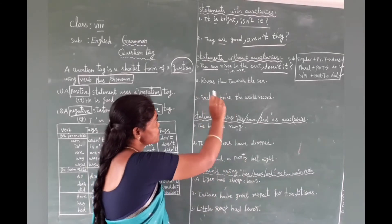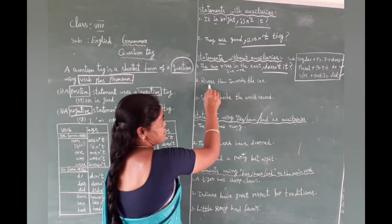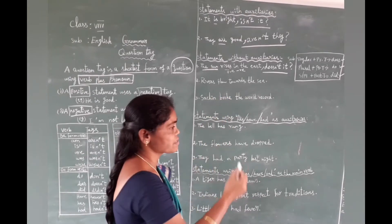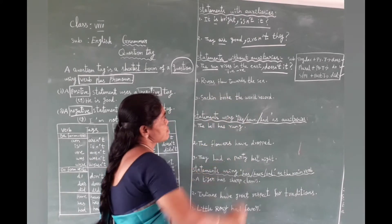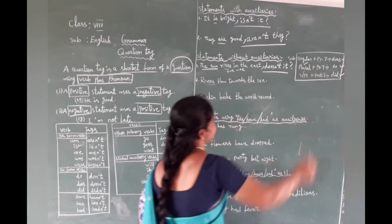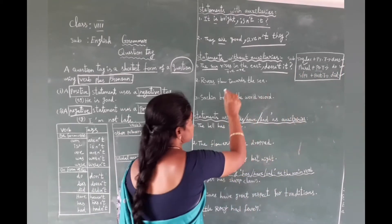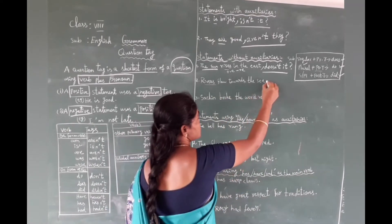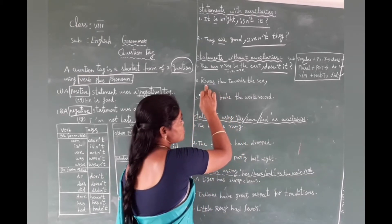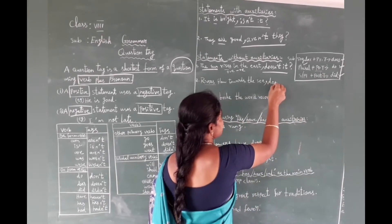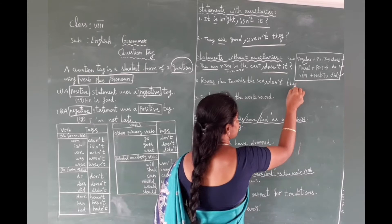Next example: 'Rivers flow towards the sea.' There is no auxiliary here. The subject 'rivers' is plural and the verb 'flow' is present tense. Subject plural plus present tense means we use 'do'. The given statement is positive, so we need a negative tag: 'don't'. The subject pronoun is 'they'. So the tag is: 'don't they?'